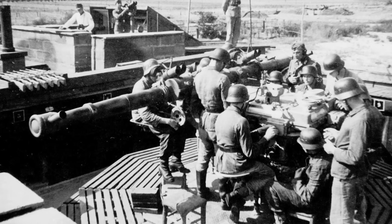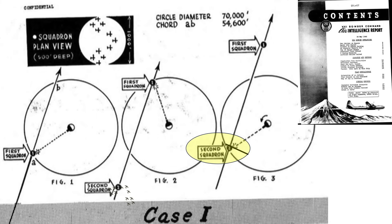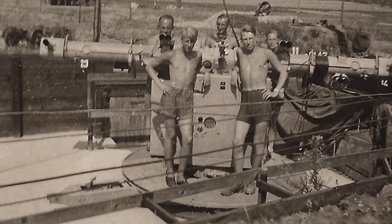The directors crunch the numbers, estimating the formation's future position based on its present travel parameters. The directors may also use data provided from the gun-laying radar. The directors provide the flak gun's elevation, azimuth, and projectile's fuse duration. The guns will have time to fully engage the second squadron as it rides through the danger zone. This process is repeated for the remaining eight squadrons.